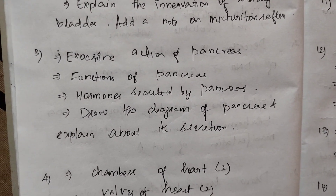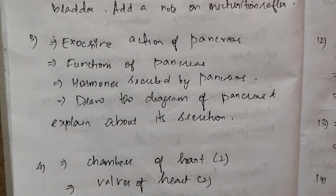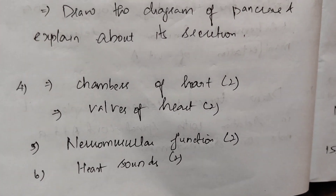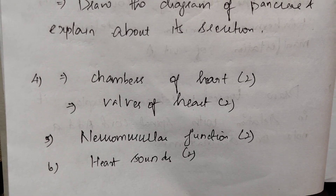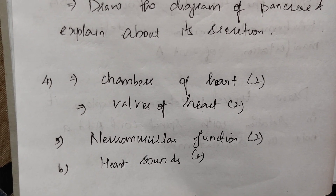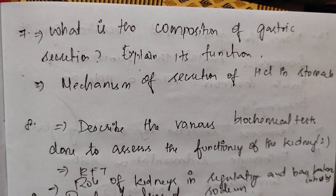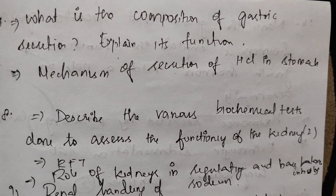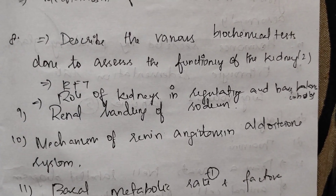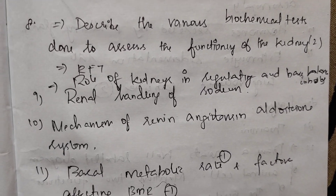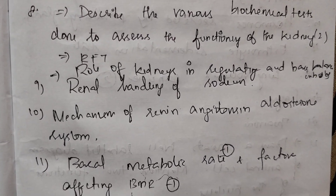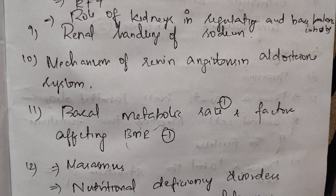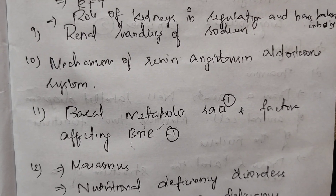Exocrine action of the pancreas, functions of the pancreas, and hormones secreted by the pancreas — draw the diagram of the pancreas and explain its secretions. Chambers of heart — 2 times. Composition of gastric secretion — explain the mechanism of secretion of HCl in the stomach. Describe the various biochemical tests done to assess the functioning of the kidney — 2 times. Renal function test, role of kidneys in regulating fluid balance, renal handling of sodium, mechanism of renin-angiotensin-aldosterone system.